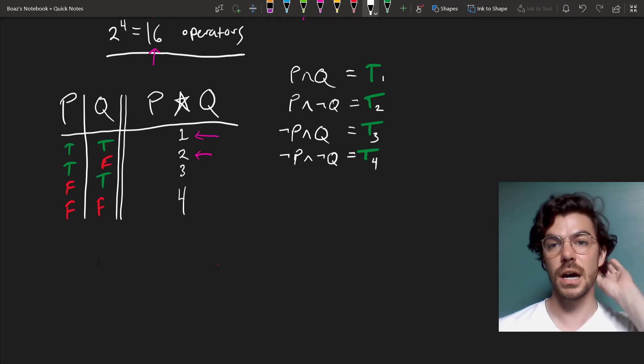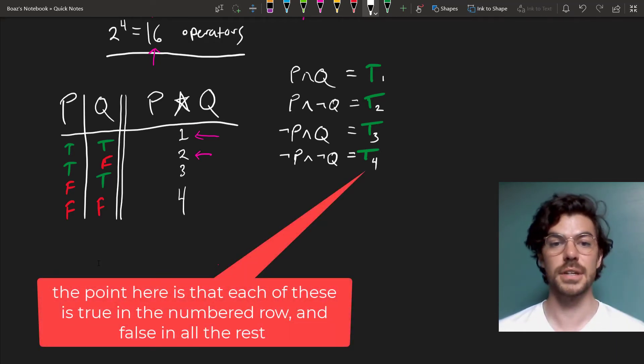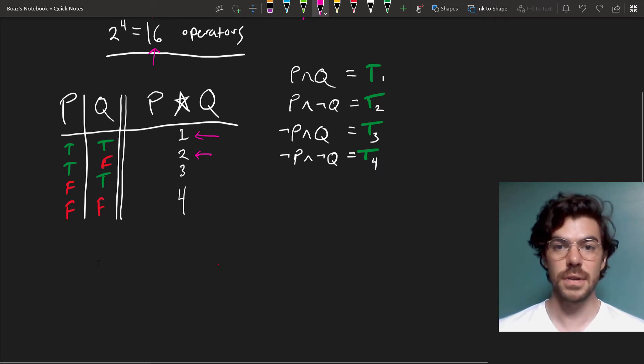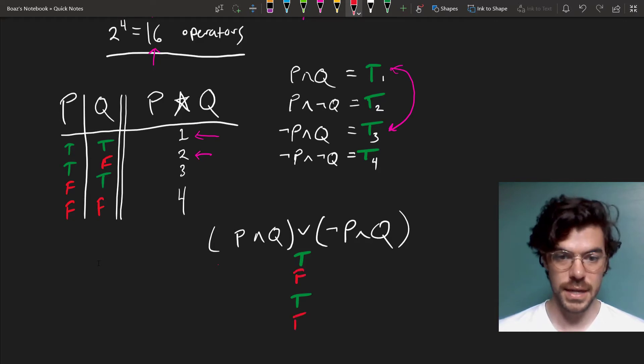Suppose that we want to construct a truth table that is true in the first value and the third. Well, we just make a disjunction of 1 and 3, and that gives us P AND Q OR NOT P AND Q. And this will be true in the first and third rows and false in the second and fourth. So this is the one that we wanted.